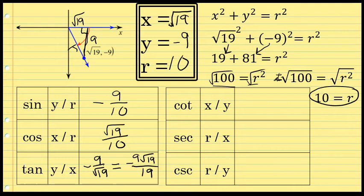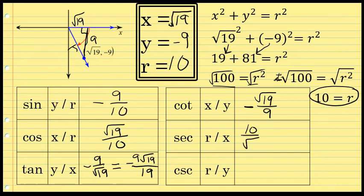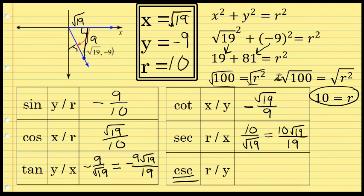Cotangent = x/y = √19/(-9), which is best written as -√19/9. Secant = r/x = 10/√19, rationalized to 10√19/19 — like cosine, secant is positive for this angle. The other four trig functions are all negative, including cosecant = r/y = 10/(-9) = -10/9. Here we can see the values of all six trig functions for the angle whose terminal side passes through (√19, -9).